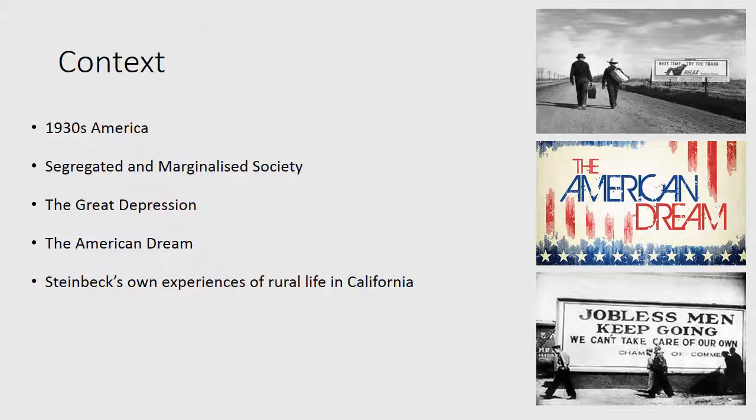The American Dream is the social ideal set out in the American Declaration of Independence, which states that all men are created equal, that they are endowed by their creator with certain rights, that among these are life, liberty and the pursuit of happiness. During this time known as the Great Depression, the American Dream had all but died.